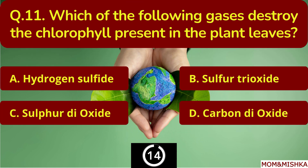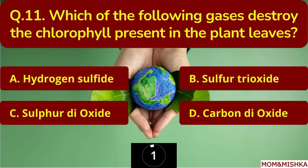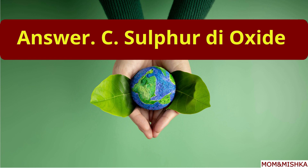Which of the following gases destroys the chlorophyll present in the plant leaves? Option C — sulfur dioxide.